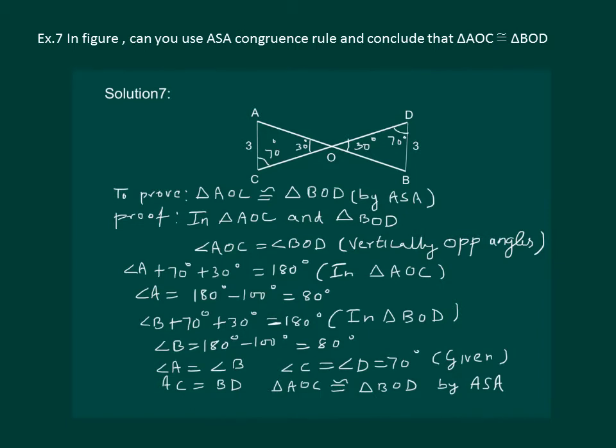Please notice here that to apply ASA property, we must have both the angles on the same base, because of which we found out angle A and angle B and found both of them to be equal to 80 degrees, and hence angle A equal to angle B which helped us in proving the congruency of triangles by ASA property.